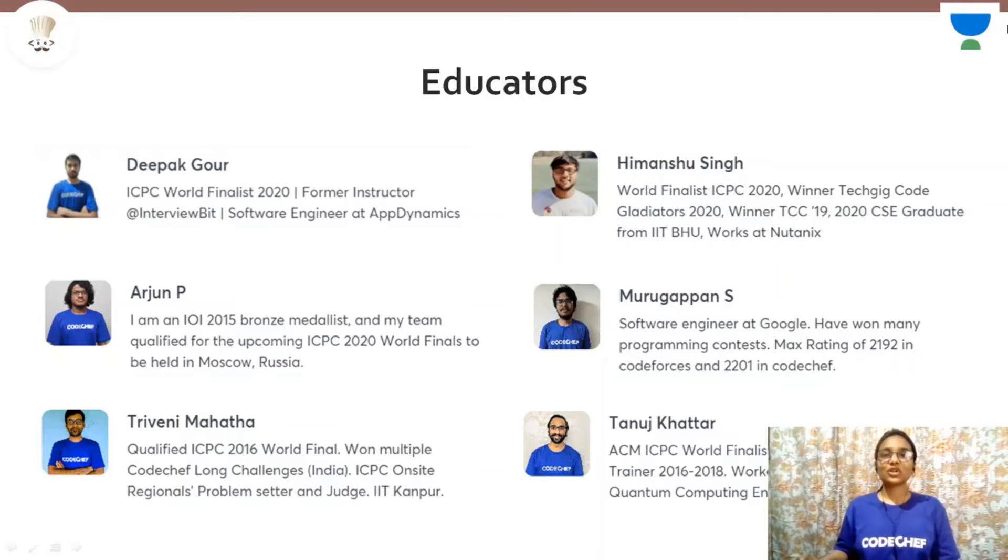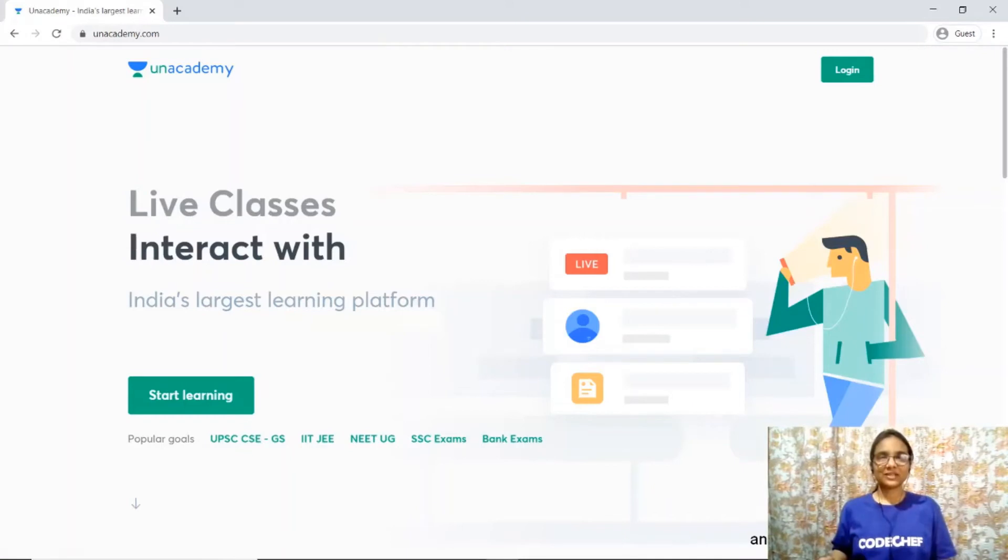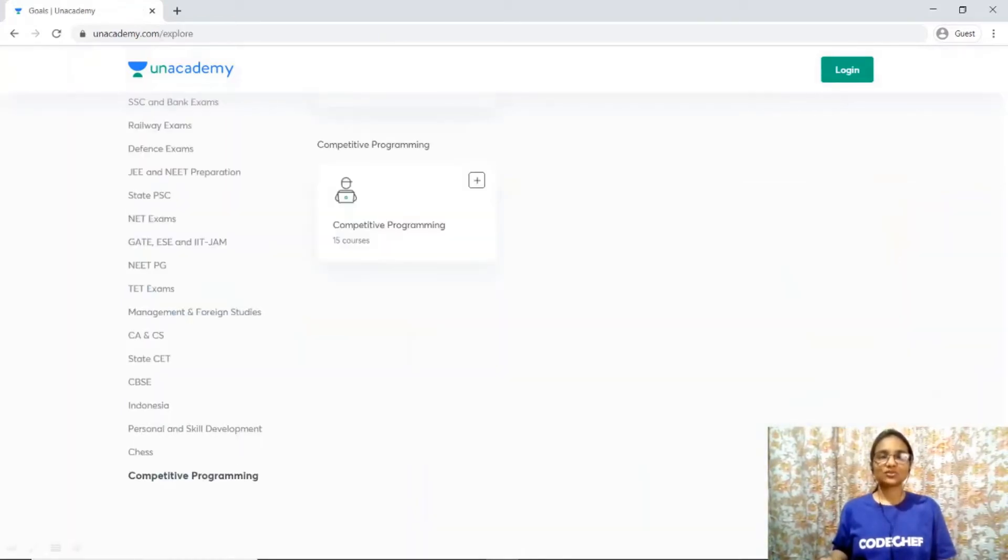These courses are covered by the top coding experts from around the world who are IOI medalists, ICPC world finalists, and have worked in companies like Google, Amazon, LinkedIn, Flipkart, and all these companies that you always dream of. All you need to do is download the Unacademy app or you can also register yourself on unacademy.com by clicking here on start learning and choosing your goal as competitive programming.